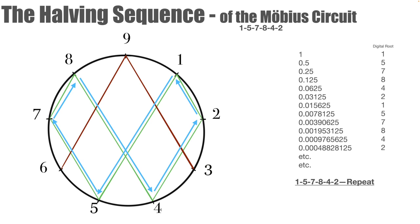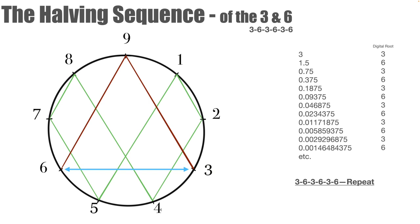Then we have the halving sequences of the three and the six. Again, the three and the six have their own halving sequence and half of three is 1.5, 1 plus 5 is 6, half of 1.5 is 0.75, 7 plus 5 equals 12, 1 plus 2 equals 3 and so on to get a constantly repeating pattern again of 3, 6, 3, 6, 3, 6 and so on.